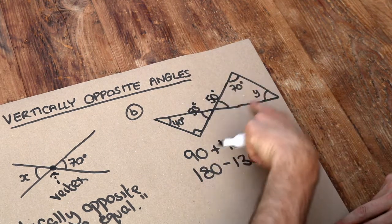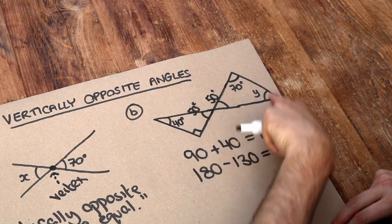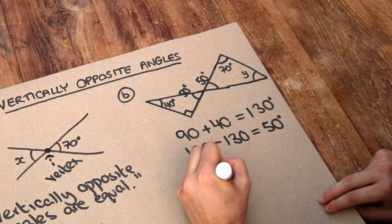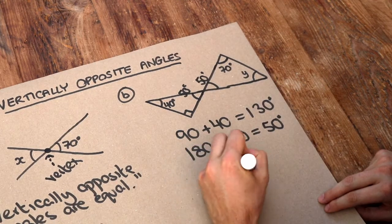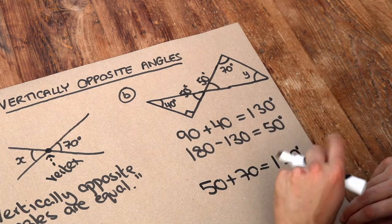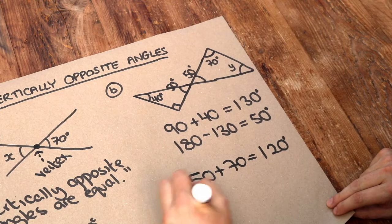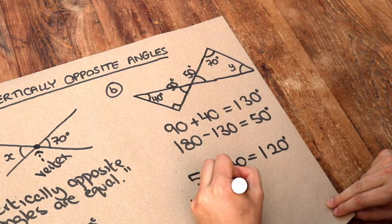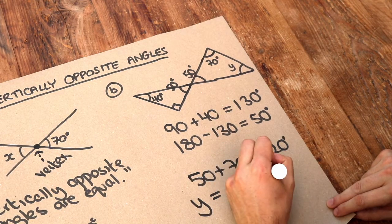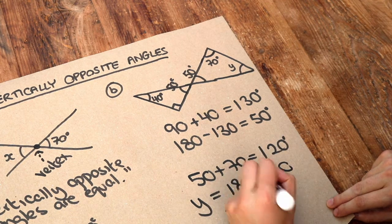Now we can concentrate on this triangle. We know the angles in it sum to 180. So if we add 50 plus 70 together, that is 120 degrees. And because these three angles add up to 180, y is just what's remaining. So we do 180 minus 120, and that will be 60 degrees.